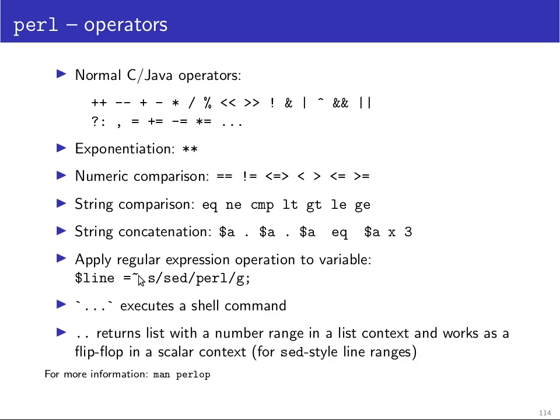There's also operators for string concatenation so the dot concatenates two strings and the lowercase x is a string repeat operator. So $a dot $a dot $a is the same here by string comparison with $a multiplied by 3. The equal tilde operator applies a regular expression operation to the variable on the left hand side. So you can have just between slashes a regular expression and then the result of that will be a boolean value that indicates whether the regular expression has matched or not. But you can also use the same s operator that we've already discussed in sed which does a substitution. So this expression here looks at the line and all occurrences of the letters sed in line will be replaced by Perl, not just the first occurrence but all occurrences because we have here the global option.